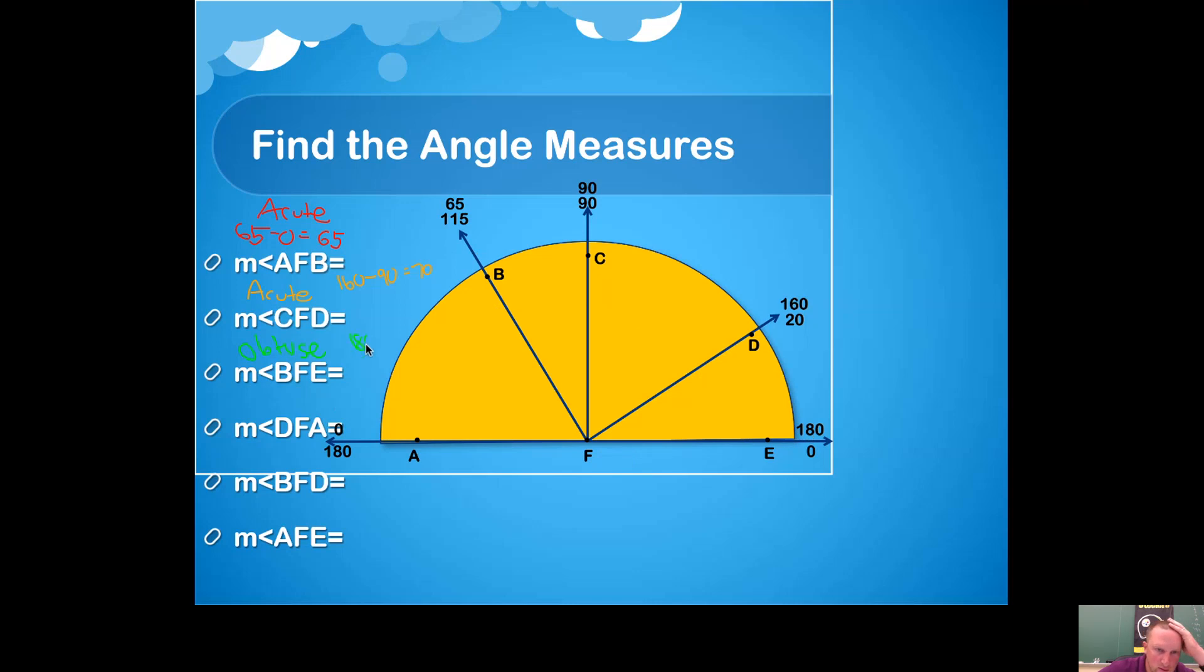Where ray FE comes through and where ray FB comes through, we have a 65. 180 minus 65 gives you 115 degrees. That's definitely an obtuse angle.